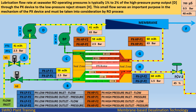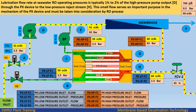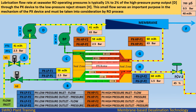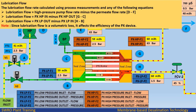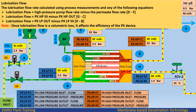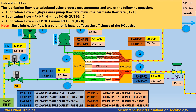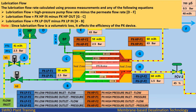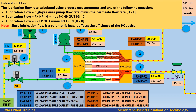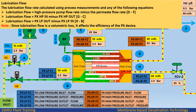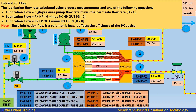This small flow serves an important purpose in the mechanism of the PX device and must be taken into consideration by the RO process. The lubrication flow rate is calculated using process measurements with the following equations: Lubrication flow = high-pressure pump flow rate (D) minus permeate flow rate (F); or lubrication flow = PX HP IN minus PX HP OUT (G, C, B); or lubrication flow = PX LP OUT minus PX LP IN (H, B). Note: since lubrication flow is a volumetric loss, it affects the efficiency of the PX device.